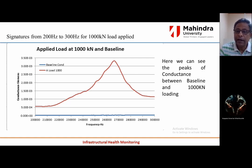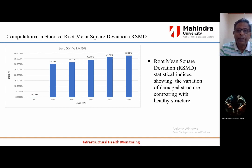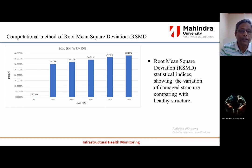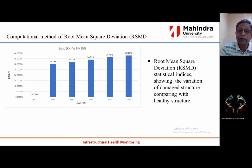The variation was taken from 200 kHz to 300 kHz, showing the peaks of conductance between baseline and 1000 kN loading. These are measured using the computational method of root mean square deviation (RMSD). RMSD statistical indices show the variation of the damaged structure compared with the healthy structure. The baseline shows 0.001 — almost no damage. From 200 kN to 1000 kN, the variation increases: 200 kN shows 30, 400 kN shows 32, 600 kN shows 34, 800 kN shows 36, and 1000 kN shows 38, demonstrating a progressive increase in damage.